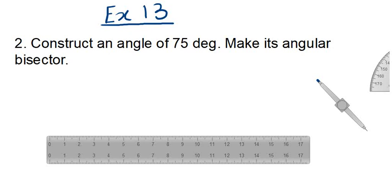Hello friends, welcome back to my YouTube channel Unlock Your Learning. In this video we are going to solve ICC Mathematics Class 7 Chapter 13 Basic Constructions, Exercise 13, Question Number 2: construct an angle of 75 degrees and make its angular bisector.